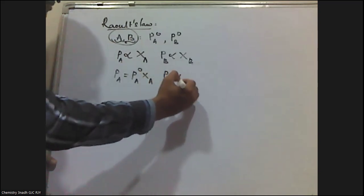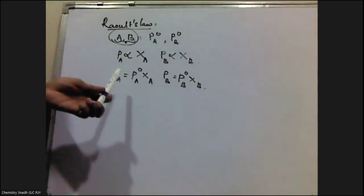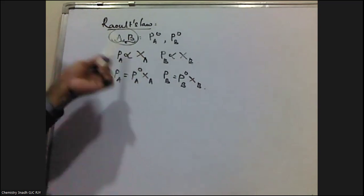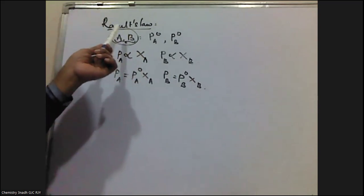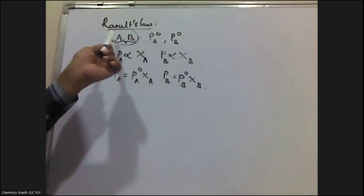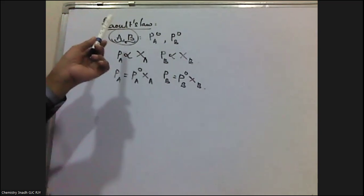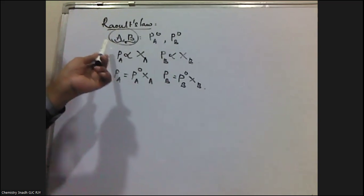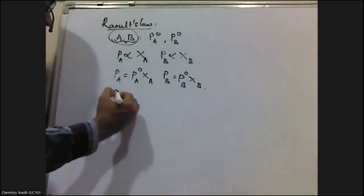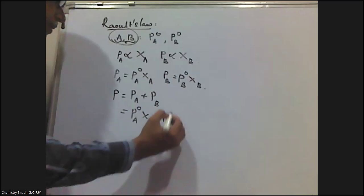Similarly, PB = PB₀ × XB. According to Raoult's law, the partial pressure of one component in a liquid-in-liquid type of solution is directly proportional to the mole fraction of that component in the solution. I have taken two volatile liquids A and B, where PA₀ is the vapor pressure of pure A and PB₀ is the vapor pressure of pure B. The total pressure is contributed by both component A and component B.